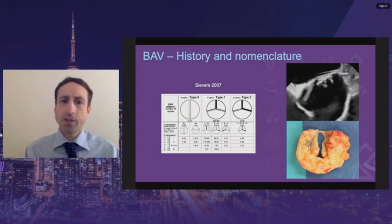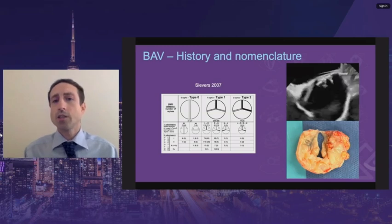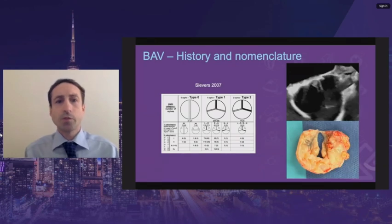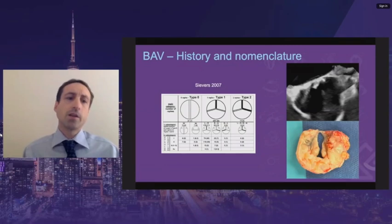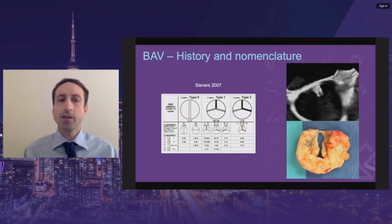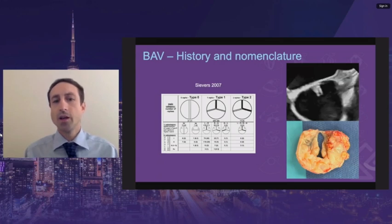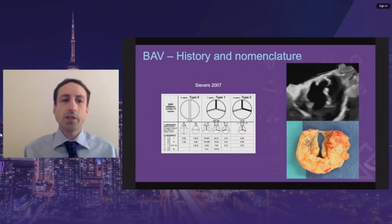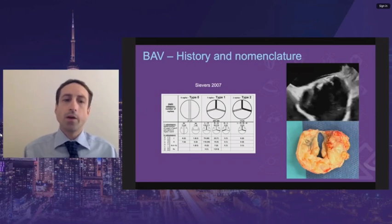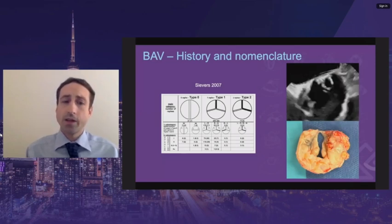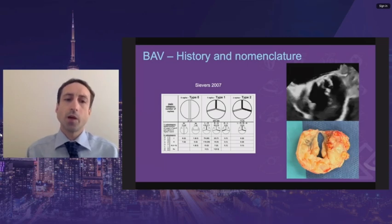Over the years there have been many classification systems to help prognosticate and assist with communication about bicuspid aortic valves and planned interventions. The most commonly used is Seavers from 2007. With this system, the main category is determined by the number of raphe: type 0 having no raphe, type 1 having one raphe, and type 2 having two raphe, otherwise known as a unicuspid aortic valve. These types can be subcategorized — for type 0 into lateral-lateral or anterior-posterior, and for type 1 the subcategorization is based on where the raphe is, whereas for type 0 it's determined by where the cusps are.